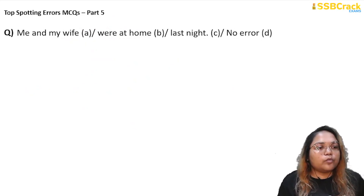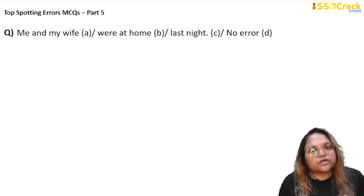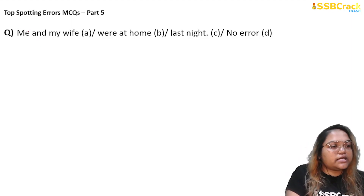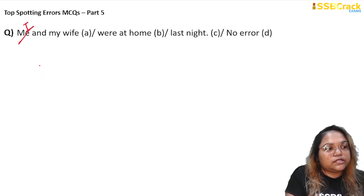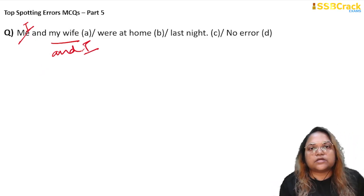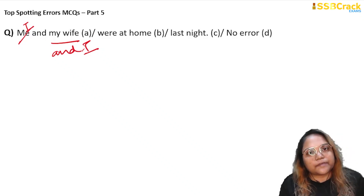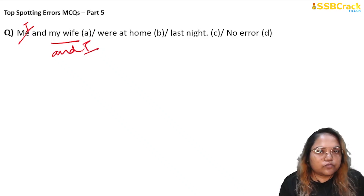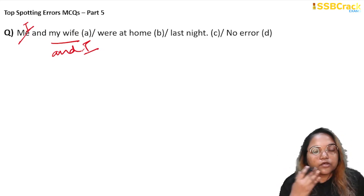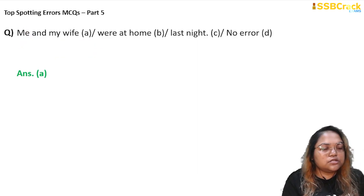Next question: 'Me and my wife were at home last night.' Here 'me' is a pronoun in the objective case — you cannot use it as a subject. So it should be 'I and my wife,' or more precisely 'my wife and I,' because when using pronouns, we always place the other person before ourselves. So it should be: 'My wife and I were at home last night.' The verb 'were' is correct since both are subjects. So the answer is option A.